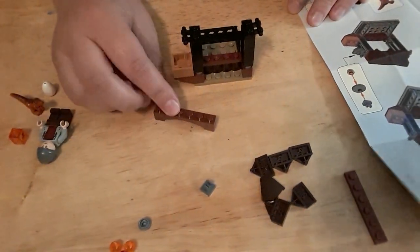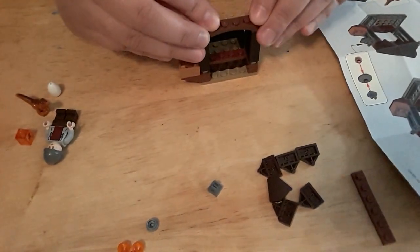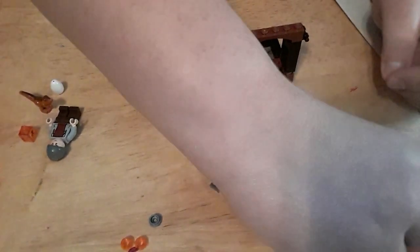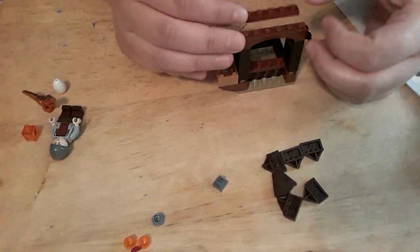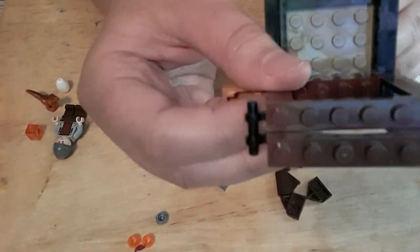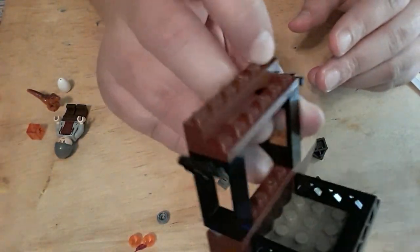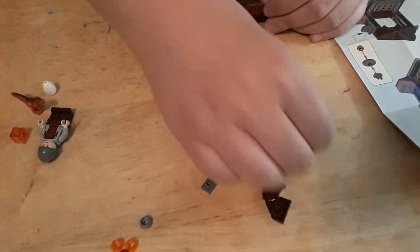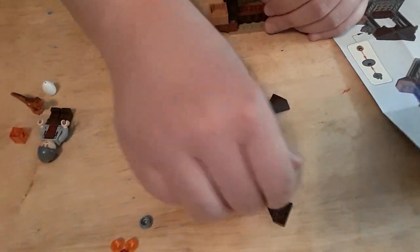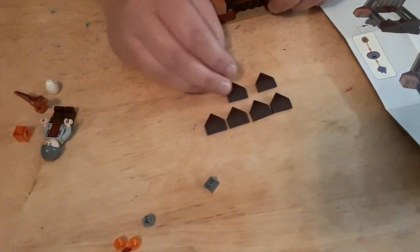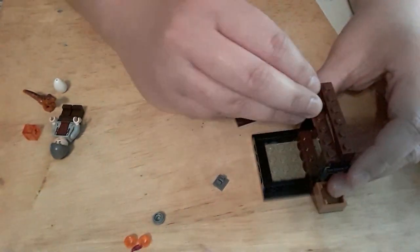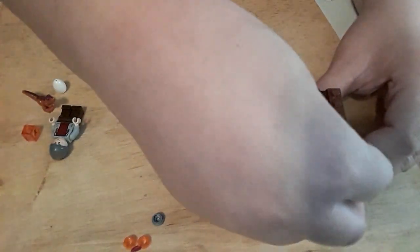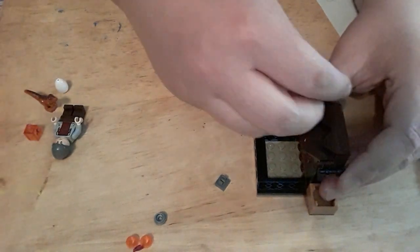Now for number eight, they want us to take this piece and put it on top. Now they want us to take this second flat brown and do the same on the second one next to this one. Number 10, they want us to take all of these pieces - it looks like they want us to make a tiny roof with it. Two, three, four, five, six.